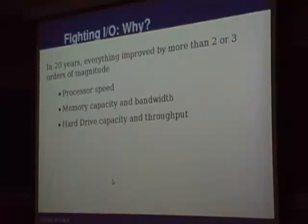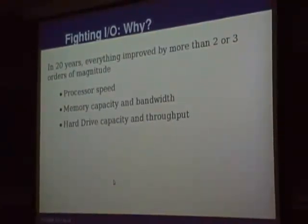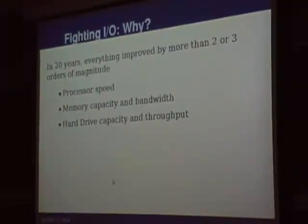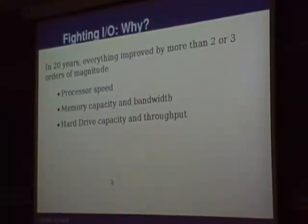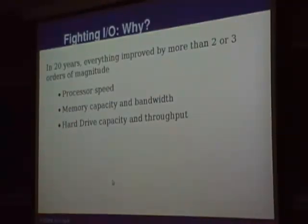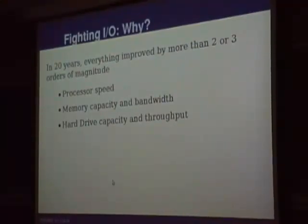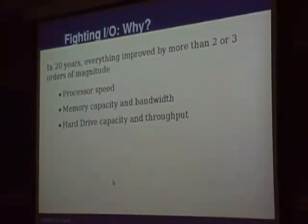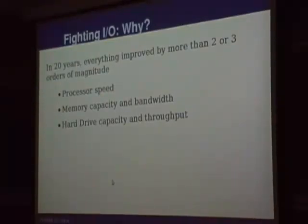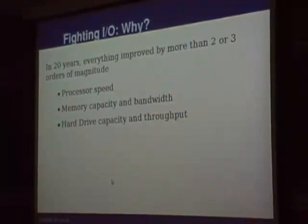Twenty years ago I had my first real PC, one with a memory management unit, and it was fast at the time. But PCs nowadays are really, really, really faster. Processor speed by then was like tens of millions of instructions per second. Now you can count in tens of thousands of millions. Memory capacity has grown from megabytes to gigabytes. Memory bandwidth was maybe one gigabit per second, now it's more like 200, 300, 400, 500 gigabit per second.